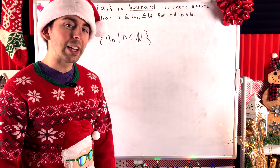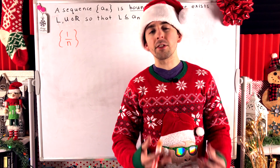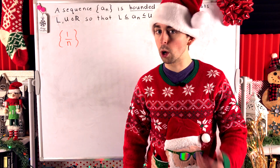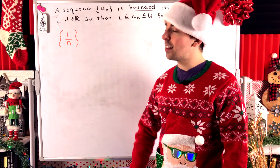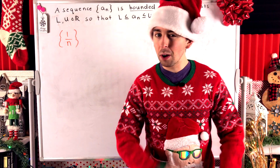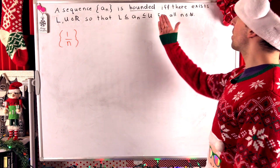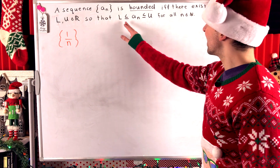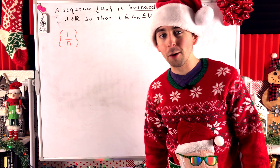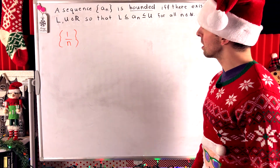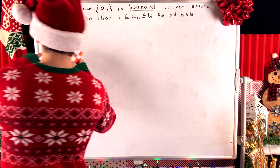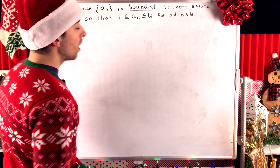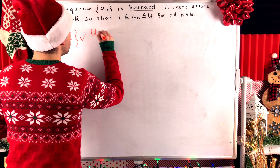Let's see some examples to help clarify the definition. Here's the sequence of reciprocals of natural numbers, so the terms are one over one, one over two, one over three, and so on. Is this sequence bounded? A sequence is bounded if and only if there exist real numbers l and u so that l is less than or equal to every term and u is greater than or equal to every term of the sequence.